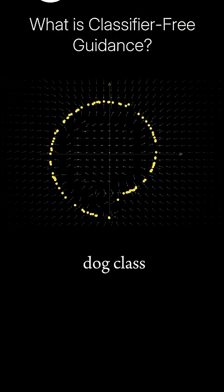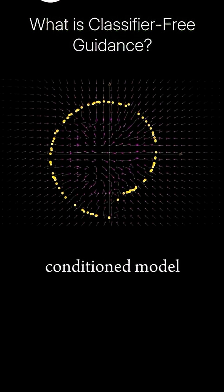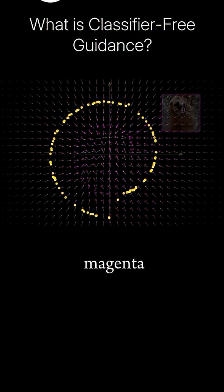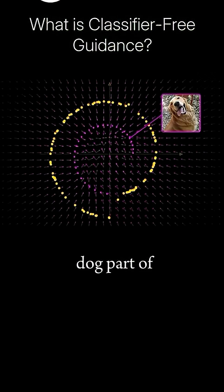Switching to our dog class, our unconditional gray vector field stays the same. But our dog-conditioned model outputs, shown in magenta, now point us more towards the dog part of our spiral.